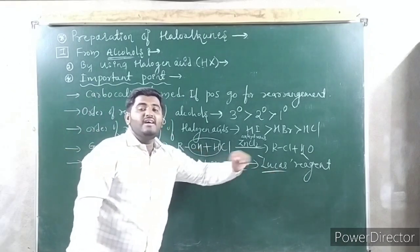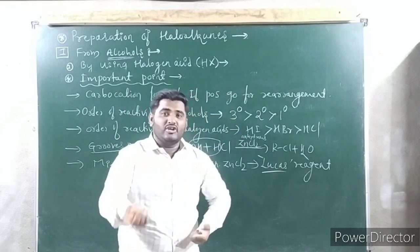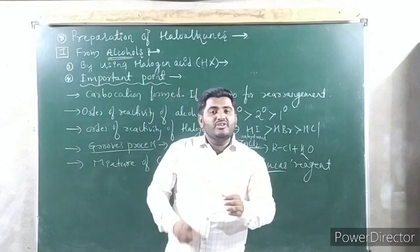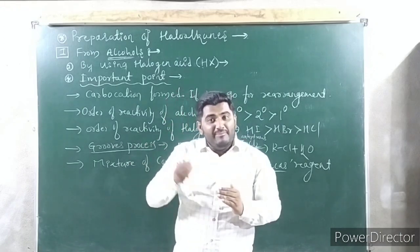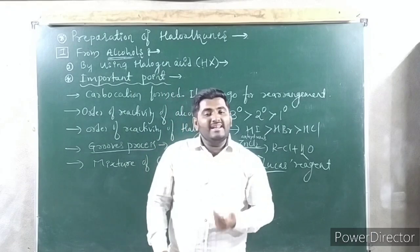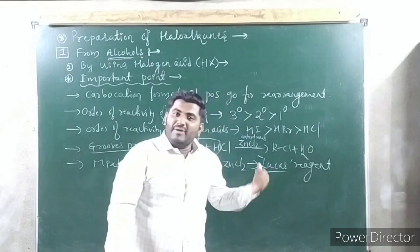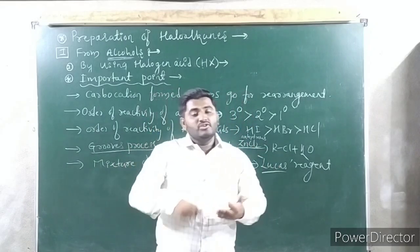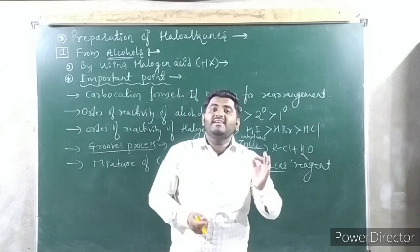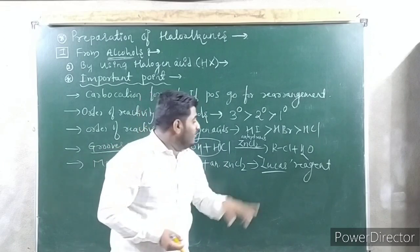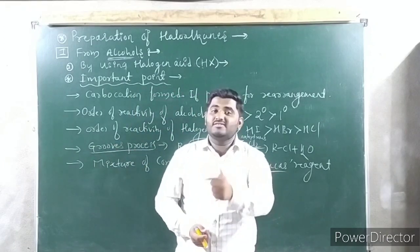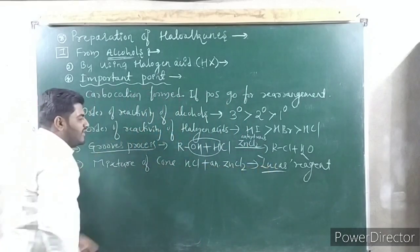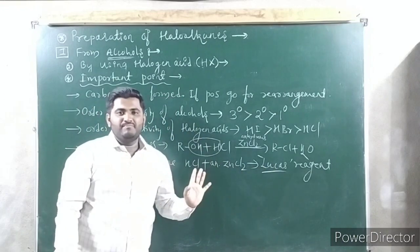You will learn about the Lucas test in the next chapter — alcohols, phenols, and ethers. The Lucas test is used to distinguish alcohols. Tertiary alcohol gives immediate turbidity with Lucas reagent. Secondary alcohol gives turbidity after 5 minutes. Primary alcohol will not give turbidity in cold conditions — you have to give heat. In this way we can separate primary, secondary, and tertiary alcohols.